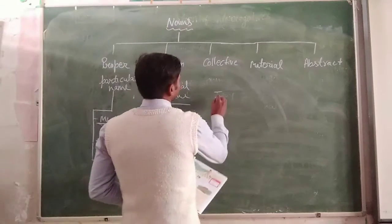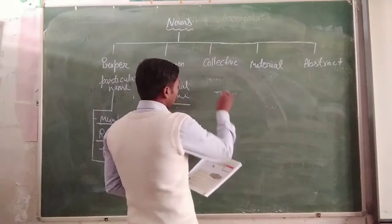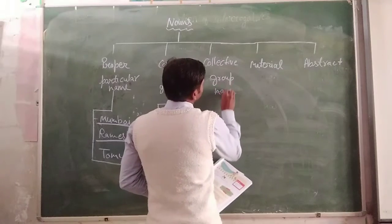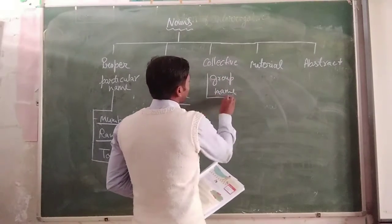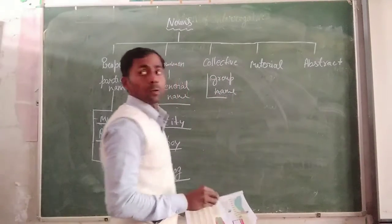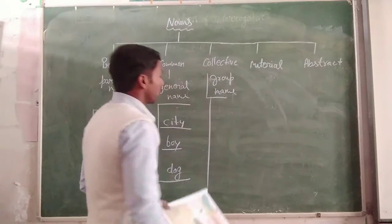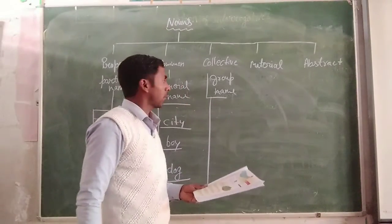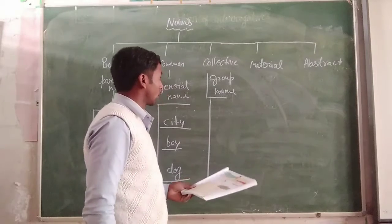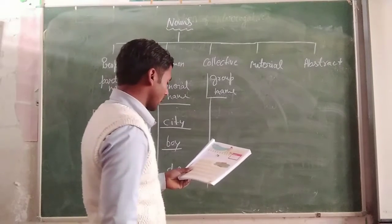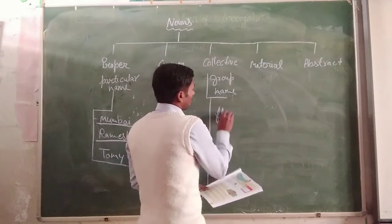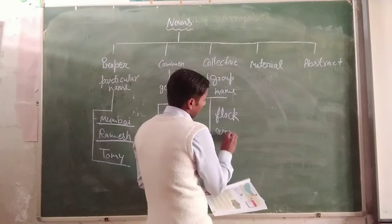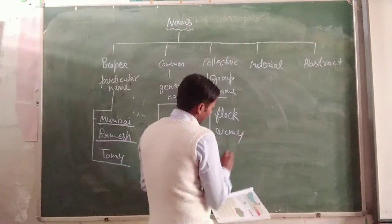It is the group name. A collective noun is a group name, and when we use a noun word for the group, it will be a collective noun. For example: army, herd.